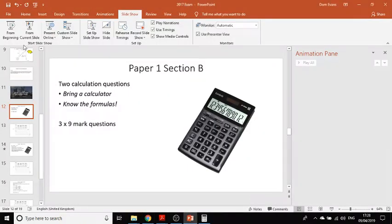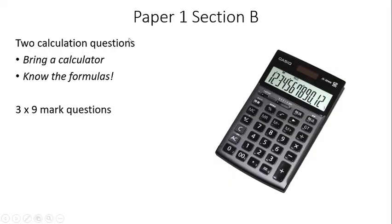Also in Section B, once you've answered the two calculation questions, are a series of written answers. Now in 2017 there was a four and a six mark question. In 2018 they changed that to three nine mark questions. From reading the examiner's report from 2018, I would imagine that they will continue to do that. But I was telling all of my students before the 2018 exam it would be calculations, a couple of short questions, and then two nine mark questions, and it wasn't like that.